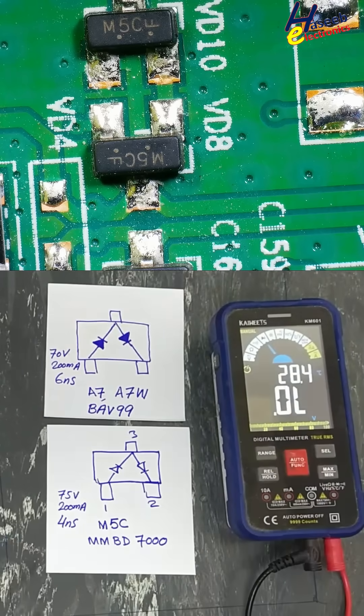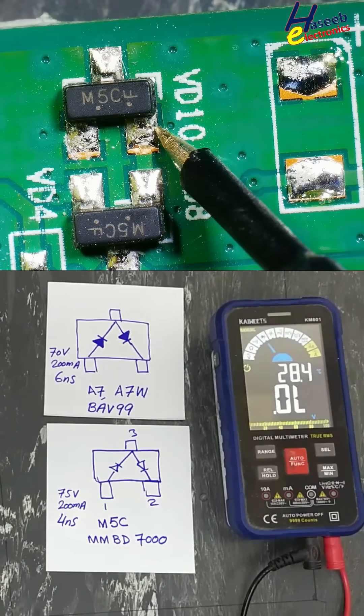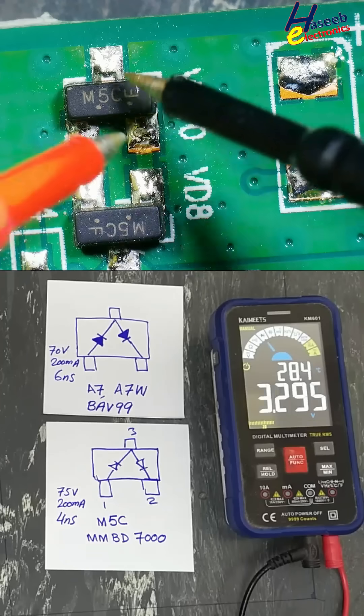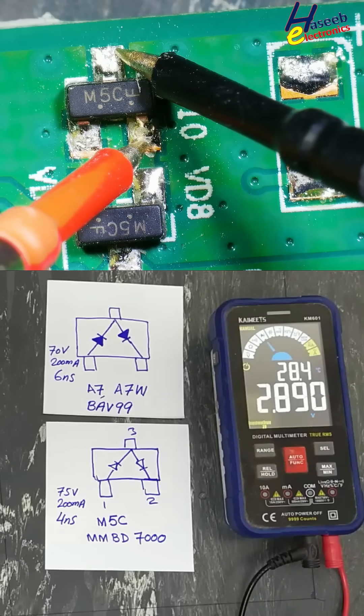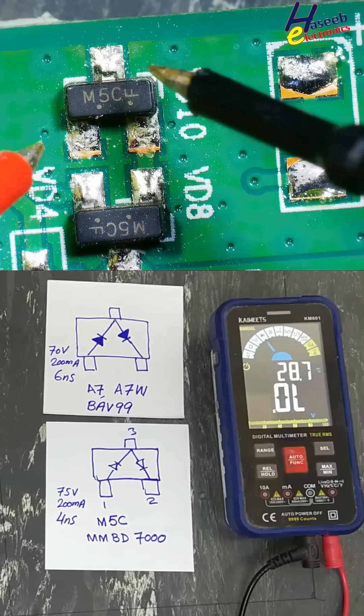Set multimeter to diode mode. Anode, cathode, anode, cathode. Forward bias. Reverse bias. Reverse bias. Forward bias. Quick check.